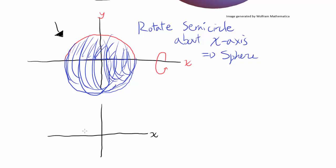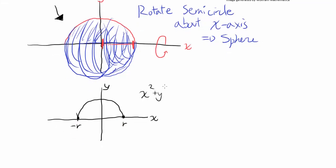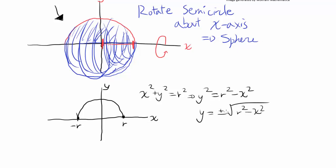Let's say this is negative r and this is r, because this is going to be the radius of our sphere. The equation of a circle centered at the origin is x² + y² = r². Rearranging gives y² = r² − x², or y = ±√(r² − x²). In this case, we focus on the positive square root y = √(r² − x²), which describes the upper semicircle. The negative square root describes the semicircle below.